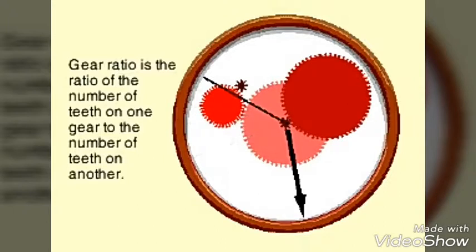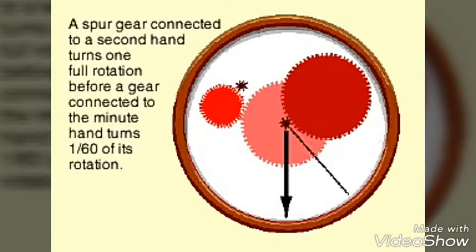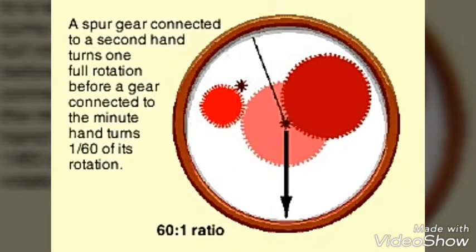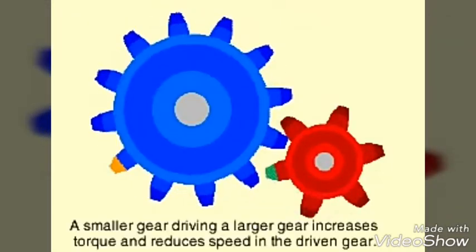For example, a spur gear connected to a second hand would turn one complete rotation before a gear connected to the minute hand turned 1/60th of its rotation, or a ratio of 60 to 1.